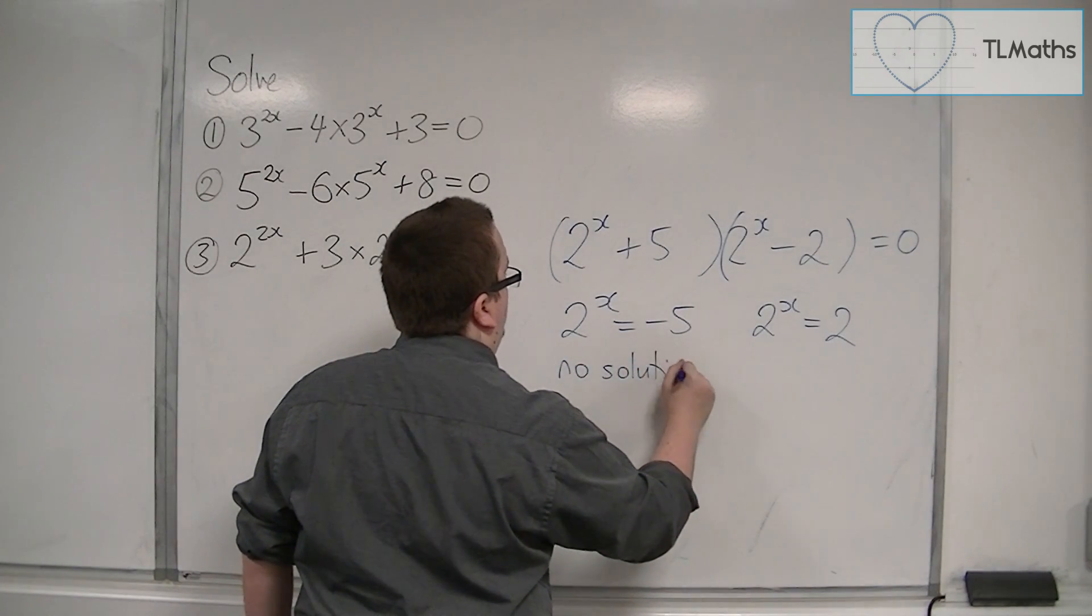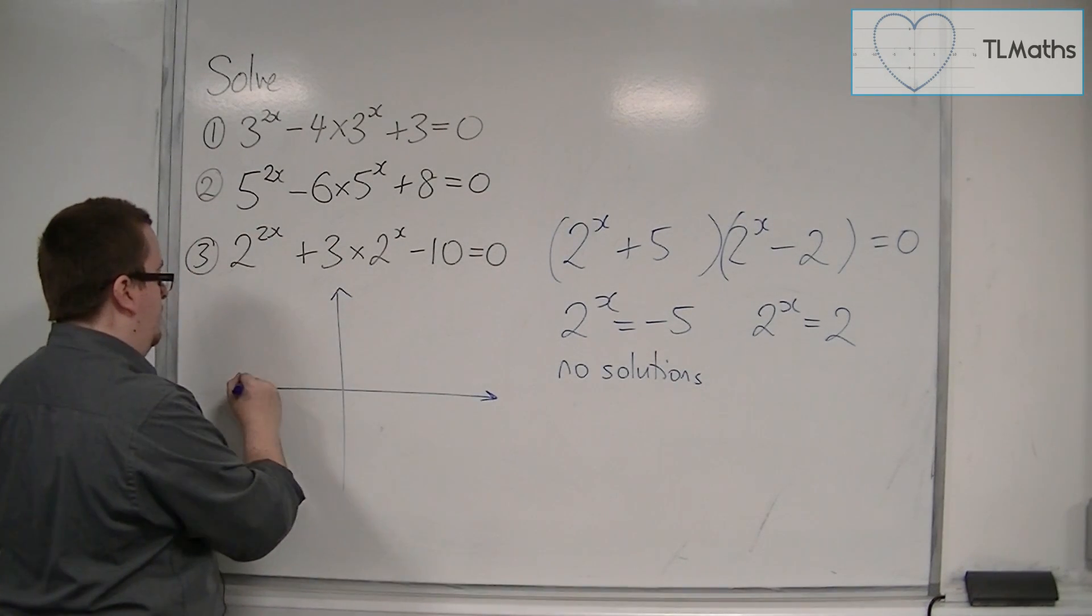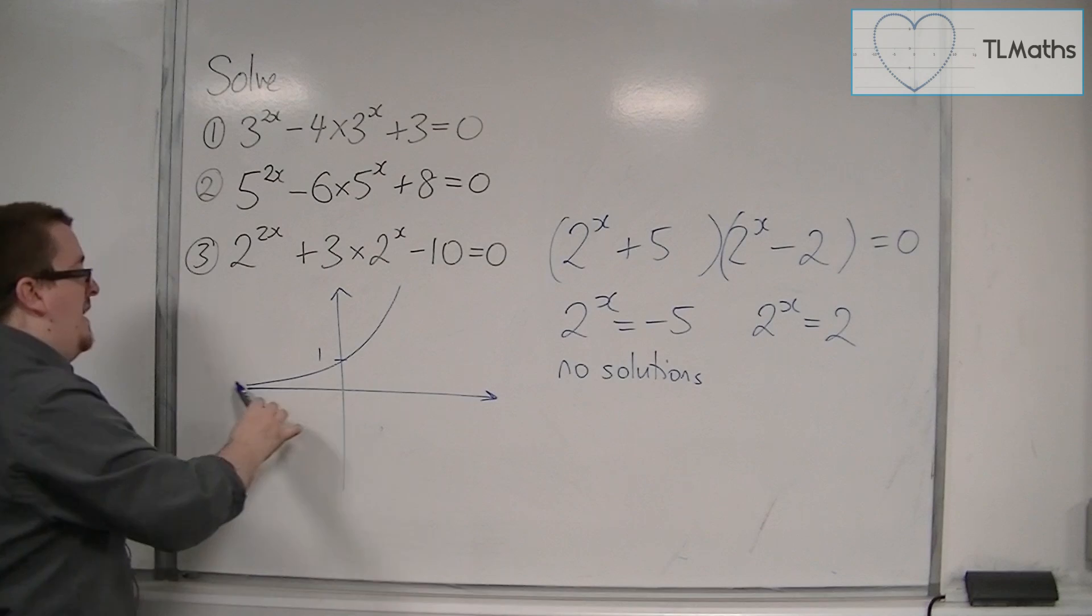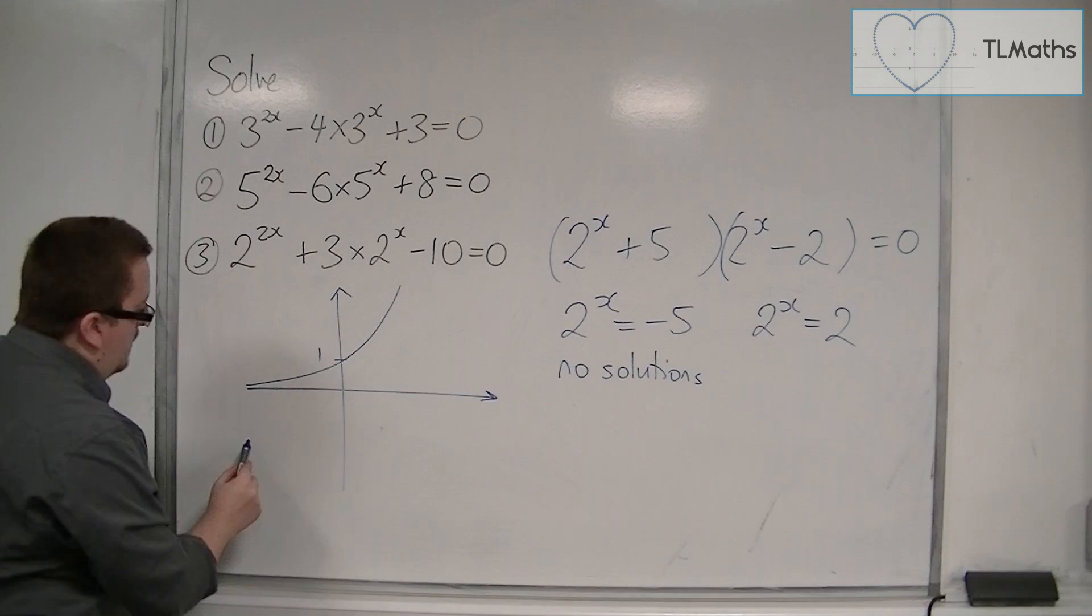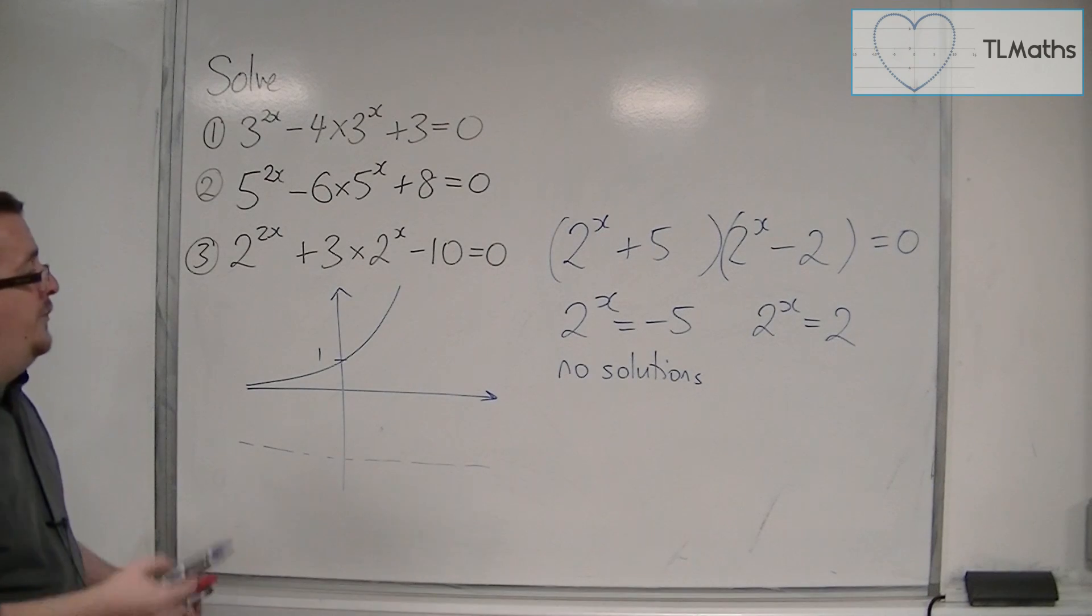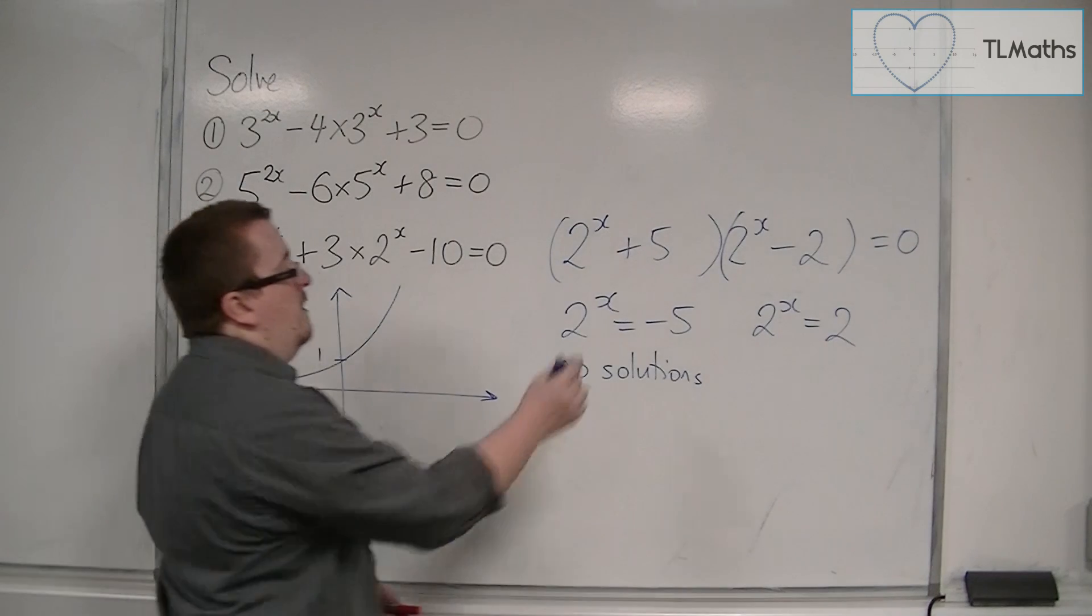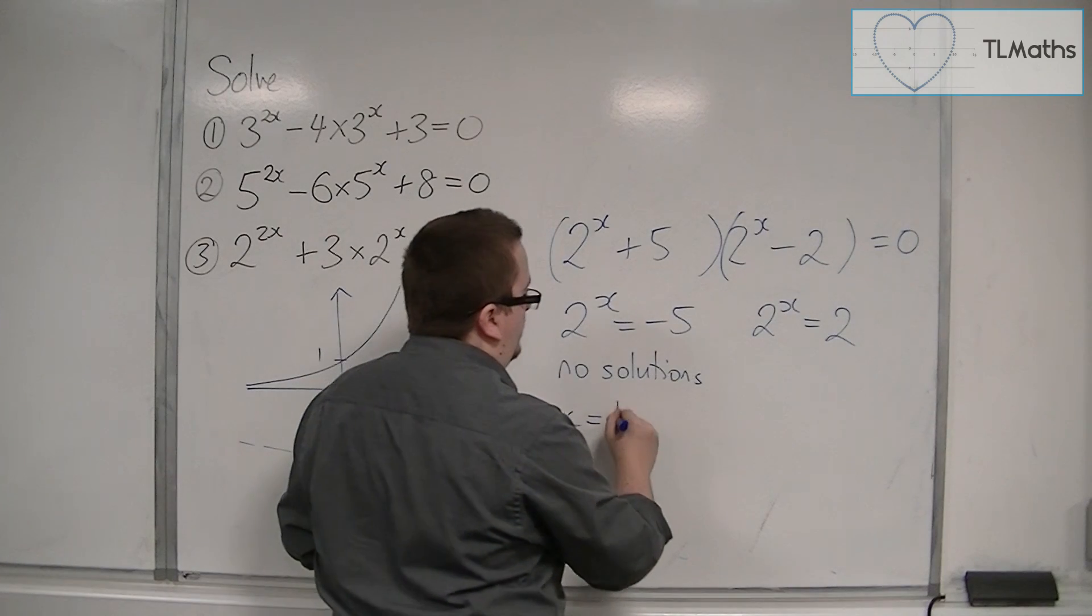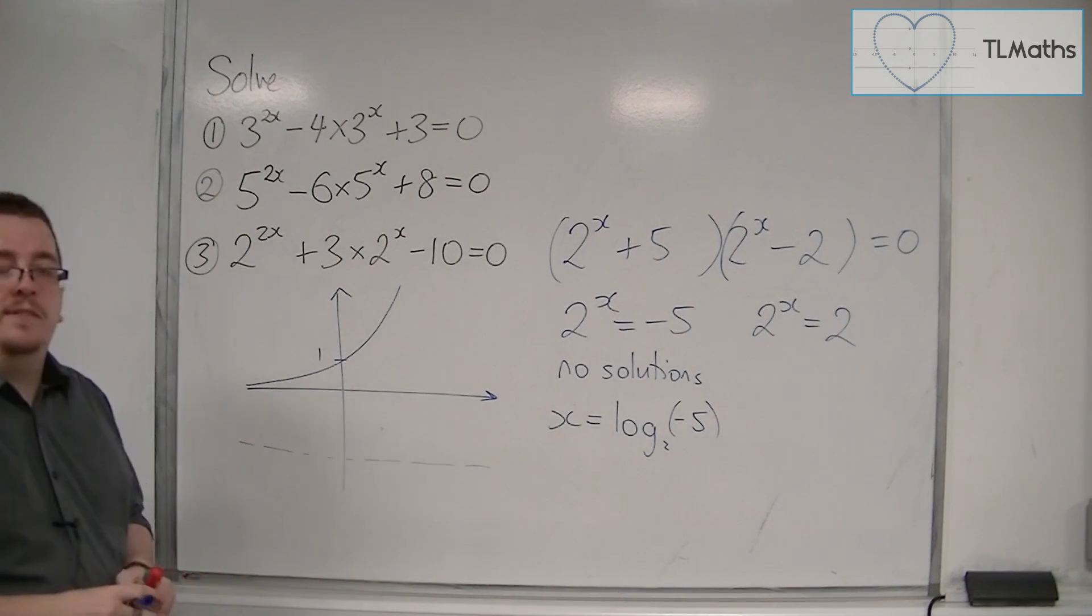Now this all harks back to the fact of what 2 to the x looks like. Now 2 to the x looks like this. The curve never crosses the x axis and so can never be negative. Minus 5 is down here, so this curve will never cross that line. And so there are no solutions to that equation. You can't rewrite this in logarithmic form and then think, well x is going to be log base 2 of minus 5. You can't find the logarithm of a negative number.